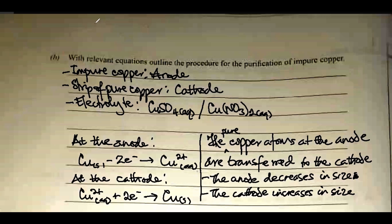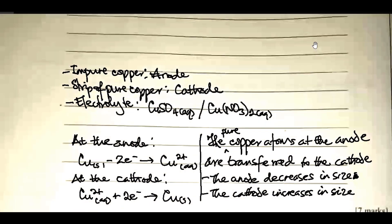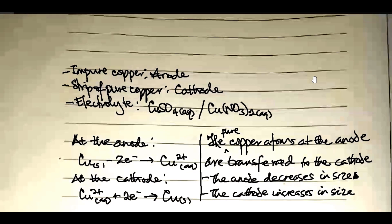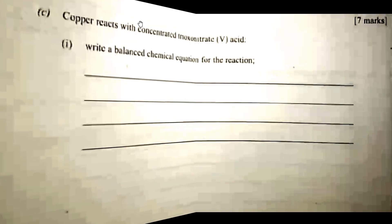That principle is based on the nature of the electrodes. There are seven marks here: one mark for the anode, one for the cathode, one for the electrolyte used, and two marks each for the half-equations at the anode and cathode — that's your seven marks.